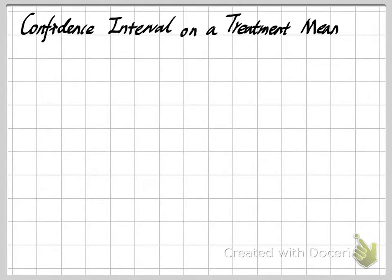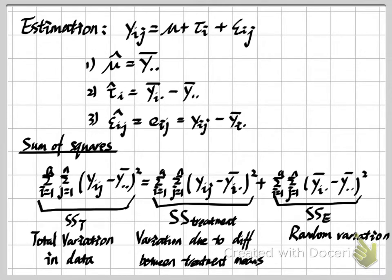Hello everyone, welcome to my channel. In this video we will continue our topic about ANOVA, or in other words talk about experiment design. This is still about a single factor experiment. In our previous videos we already talked about using the total sample mean y-bar dot dot to estimate our mu, and also the estimator of tau-hat i and the estimator of our epsilon term epsilon ij.